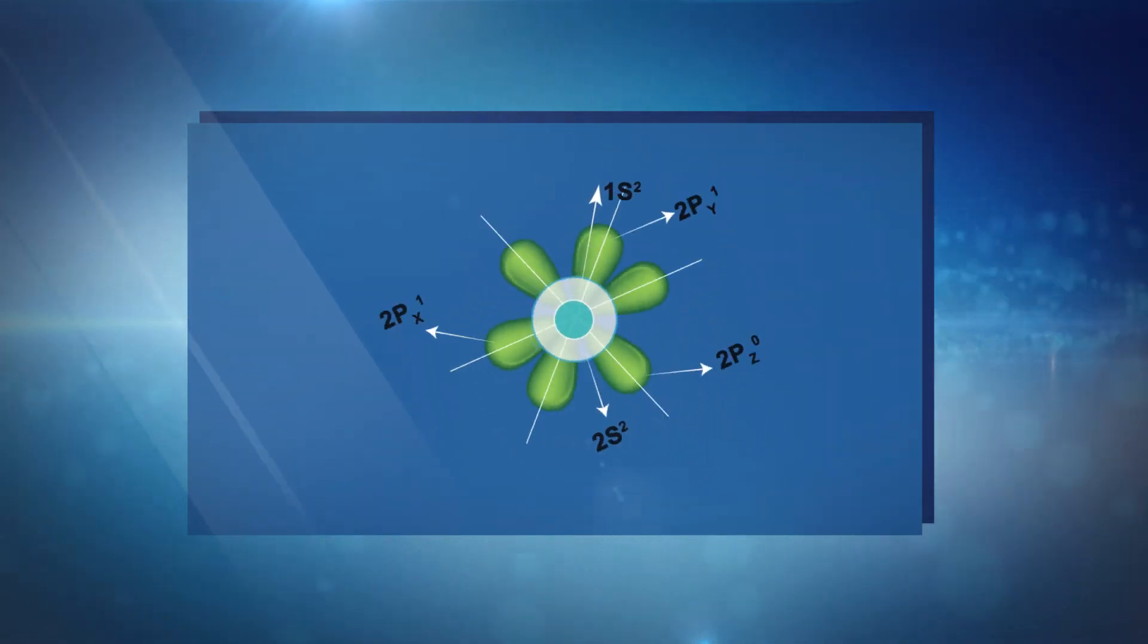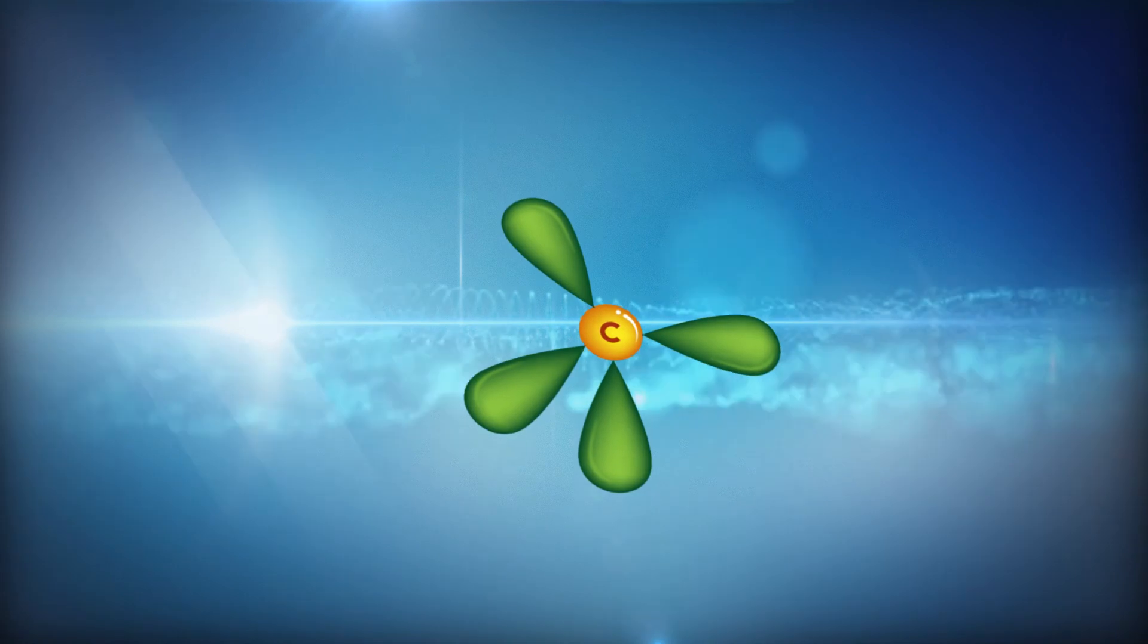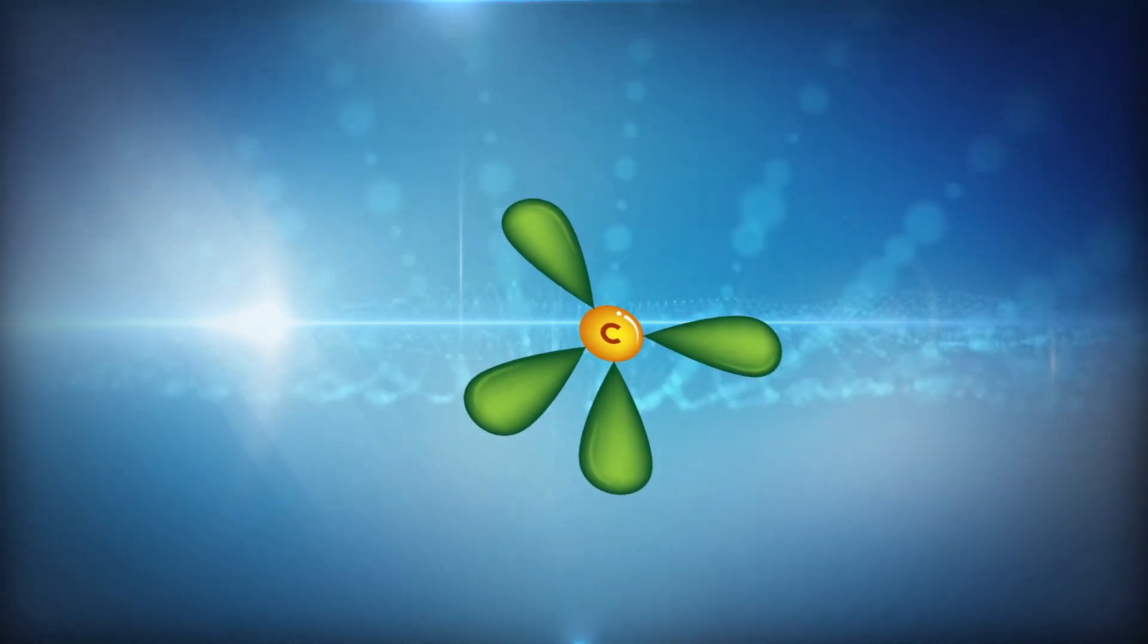This intermixing of orbitals is known as hybridization. As a result of hybridization, four equal sp3 hybrid orbitals are formed.